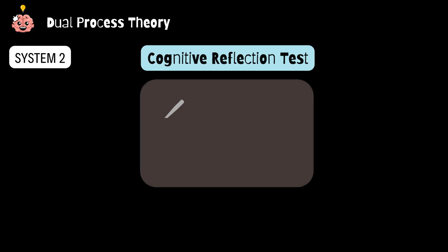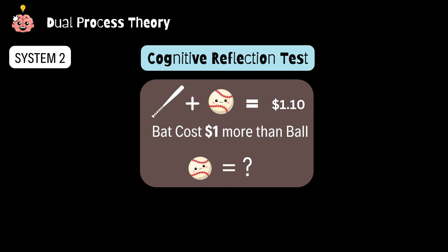Let's test your system two with the cognitive reflection test. Bet you've seen this one before. Remember the bat and ball question? Most people's immediate gut reaction, thanks system one, is to say the ball costs 10 cents. But, drum roll, it's actually 5 cents.